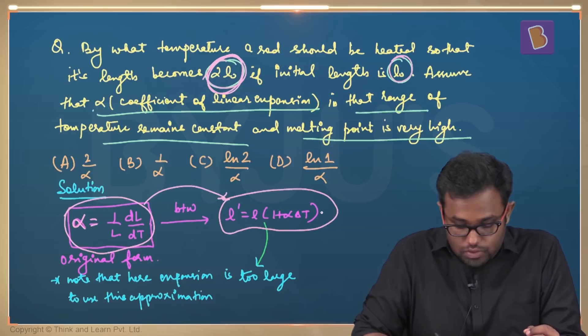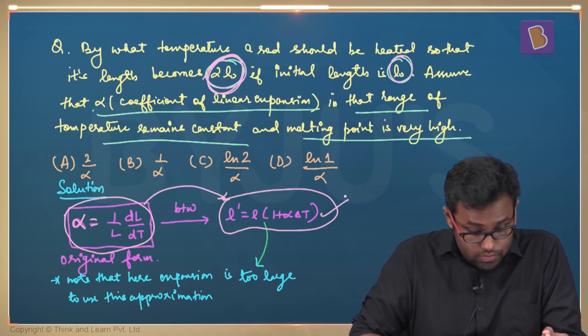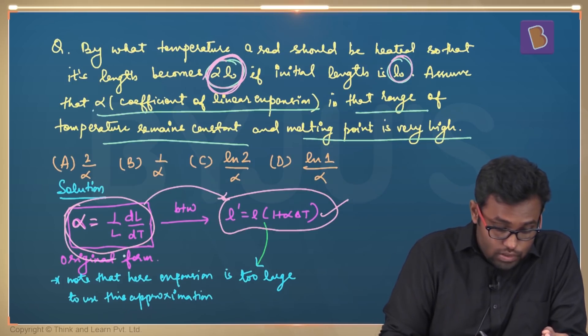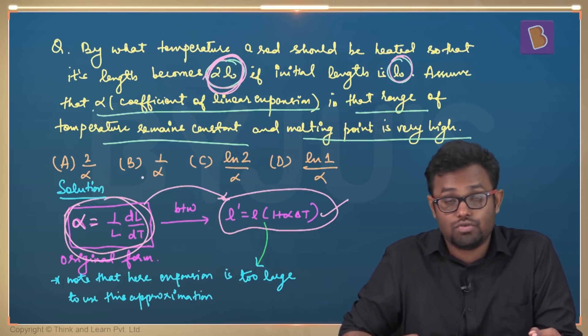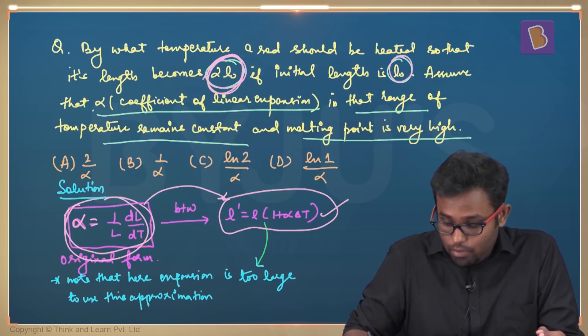Now this approximation works when the temperature change is not very large. But if the temperature change is large, then you can't do this. Then you will have to use the original form like in this particular question. So this particular question is very important to understand.